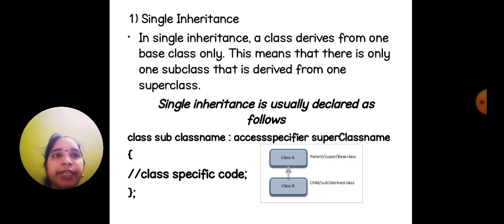Single inheritance means a class derives from one base class only. This means that there is only one subclass that is derived from one superclass. Single inheritance is usually declared like in this picture: class subname colon access specifier superclassname, then class-specific code.